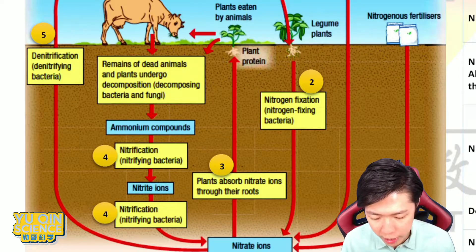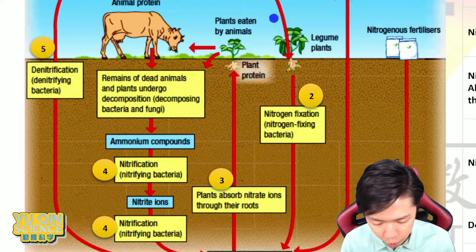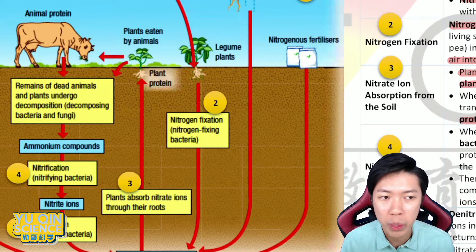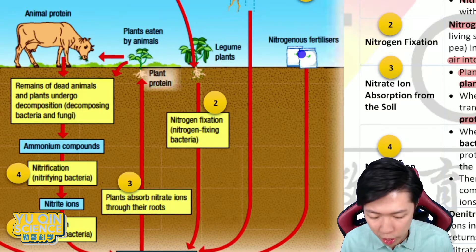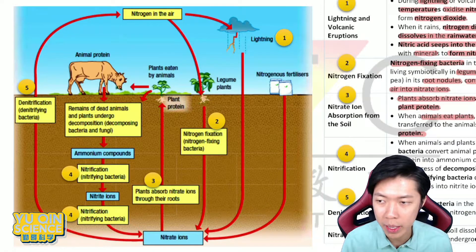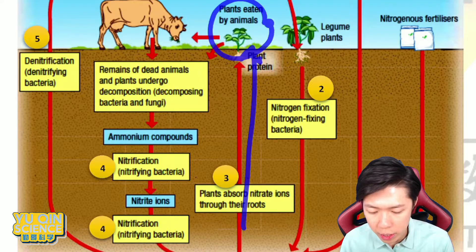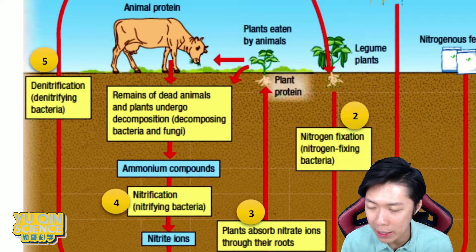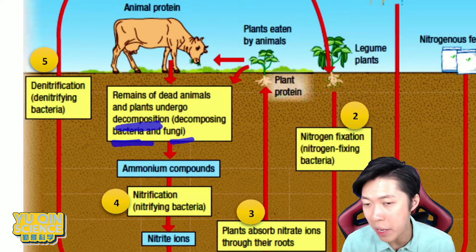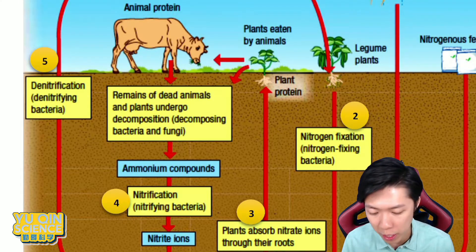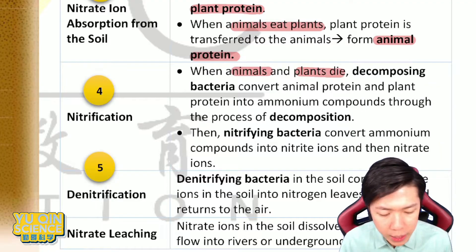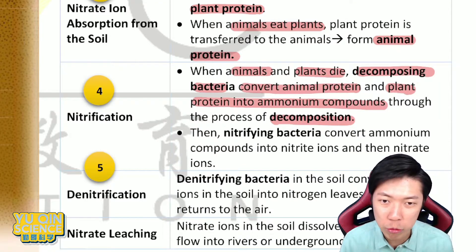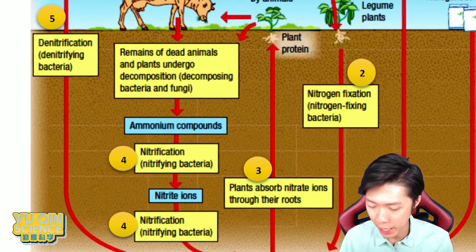So number three was absorbed by plants, number two and one were lightning and NFB. Another way to add nitrate is to use nitrogen fertilizer — more straightforward, used by farmers in agriculture. Now, one day animals and plants will die. When they die, they go through a process called decomposition, carried out by decomposing bacteria and fungi.